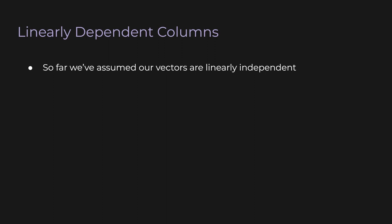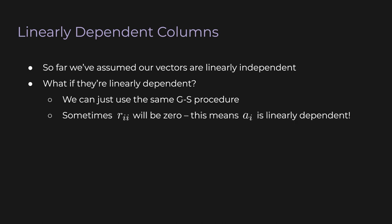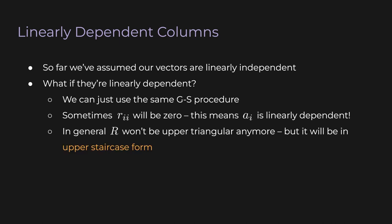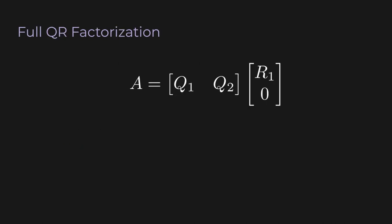Now, up until this point, we've implicitly assumed that our original vectors are linearly independent. At the beginning of the ith step of the Gram-Schmidt procedure, we subtract from ai the projections of ai along all of the previous orthonormal vectors, and we've assumed that we will always have some vector left over. But what if we don't? What if ai can be perfectly explained by the previous orthonormal vectors? This means ai is redundant. It's linearly dependent. So how do we deal with this? Well actually, we don't need to do anything. We can just use the same Gram-Schmidt procedure, without modification. If ai is linearly dependent on the previous vectors, then the coefficient rii will just be zero, and that's fine. It just means that the matrix R won't be upper triangular anymore. If you take a minute to draw out an example, you'll see that the matrix R now has a structure called upper staircase form, which looks exactly how it sounds.